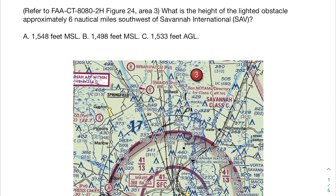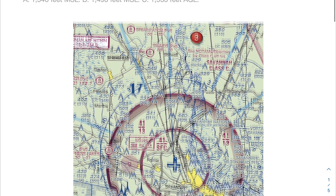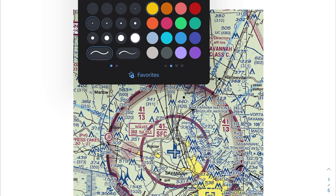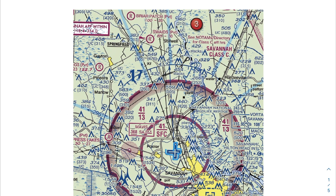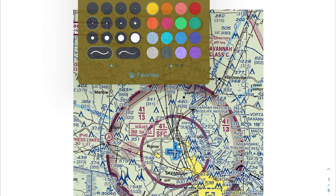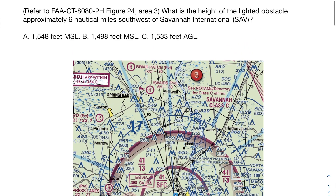Starting off with this first practice problem: what is the height of the lighted obstacle approximately six nautical miles southwest of Savannah International, abbreviated as SAV? I recommend not looking at the answer choices so they don't sway you. Come up with an answer first, then check if any of the choices match. We need to find something six nautical miles from the airport and determine the elevation of that obstacle. The key detail here is that it's a lighted obstacle.